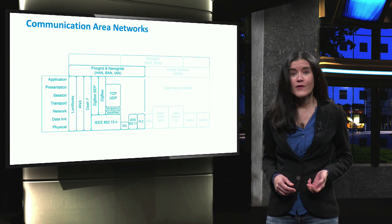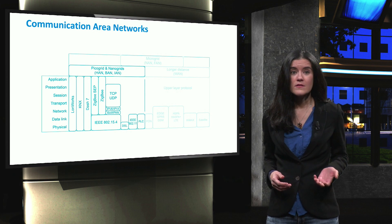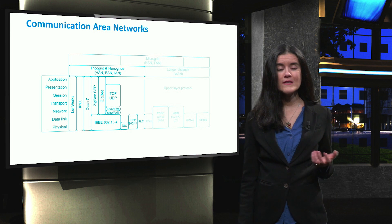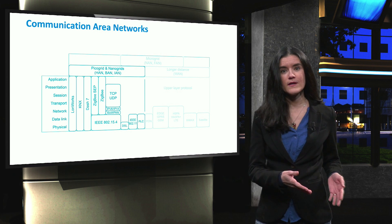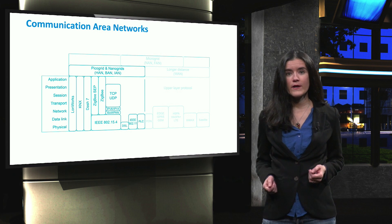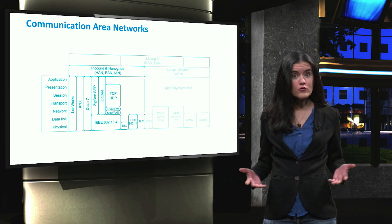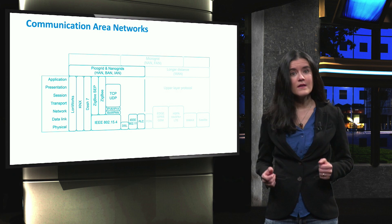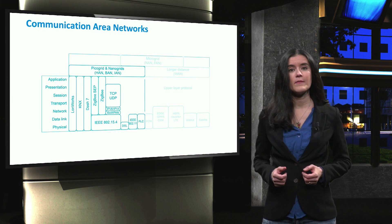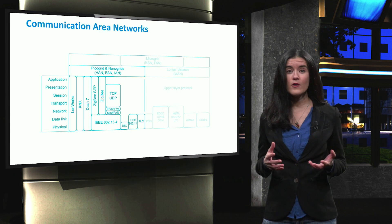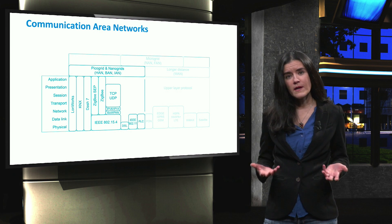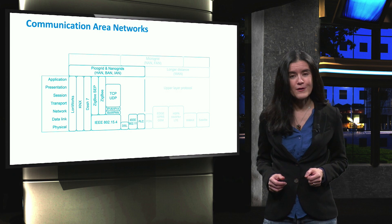The body area network does two things. First, it manages the communication inside each building, which can be considered a nano grid. It also collects the production of the renewable energy sources within a building and the consumption of each apartment, which can be considered a pick-up grid.